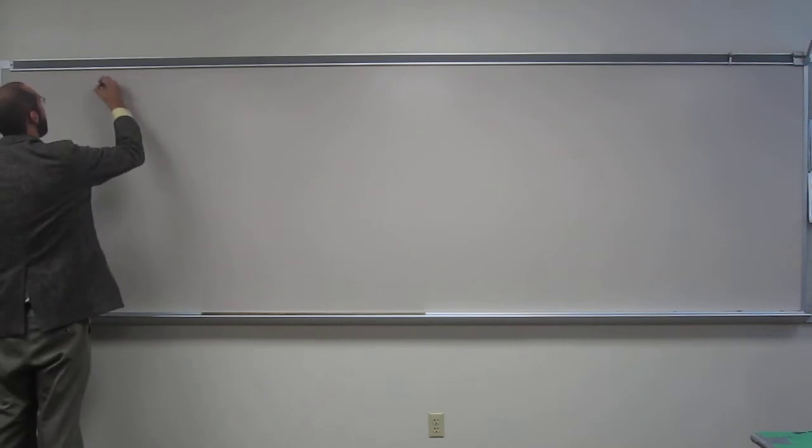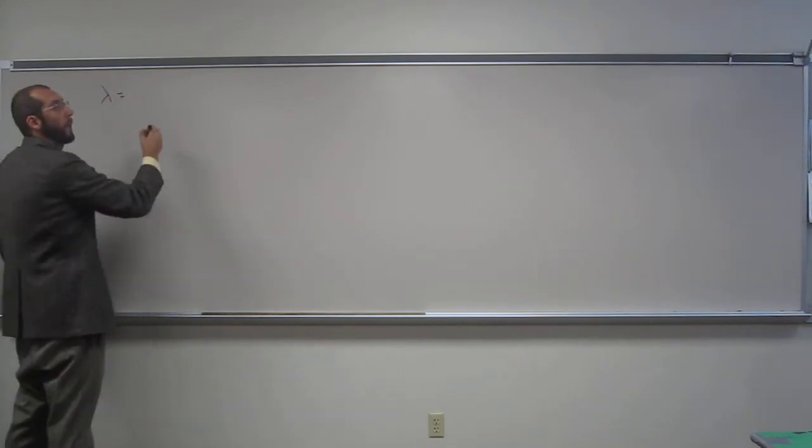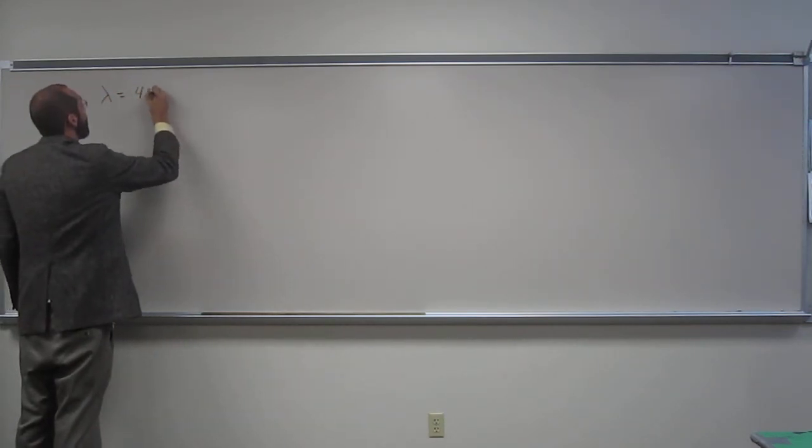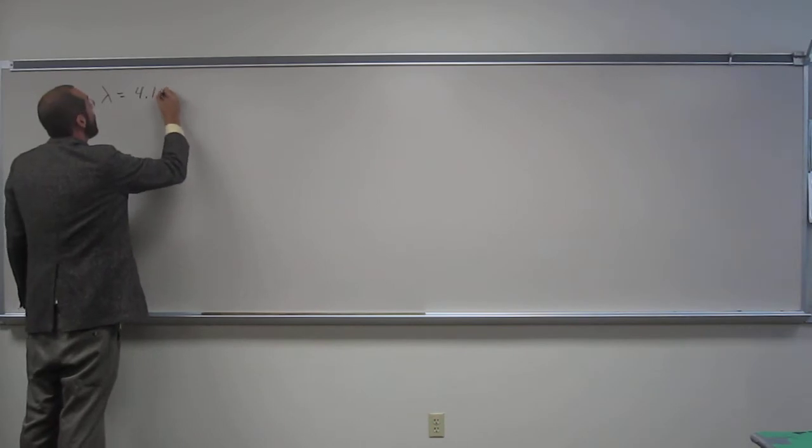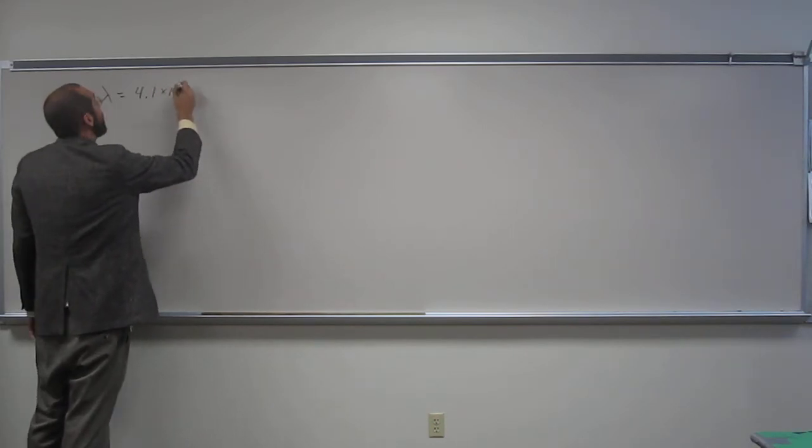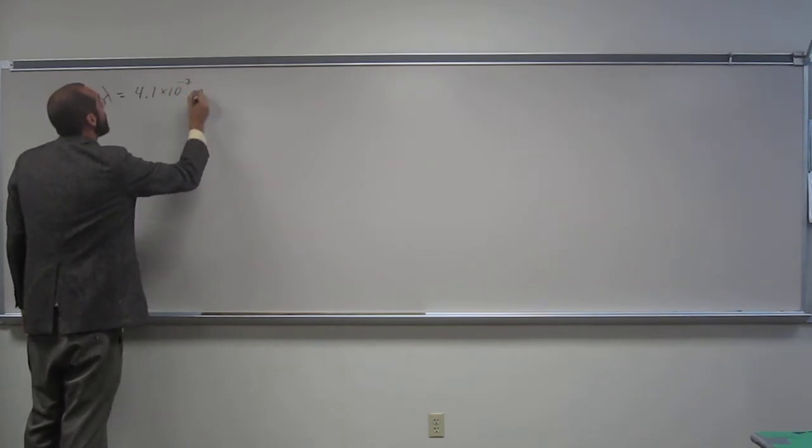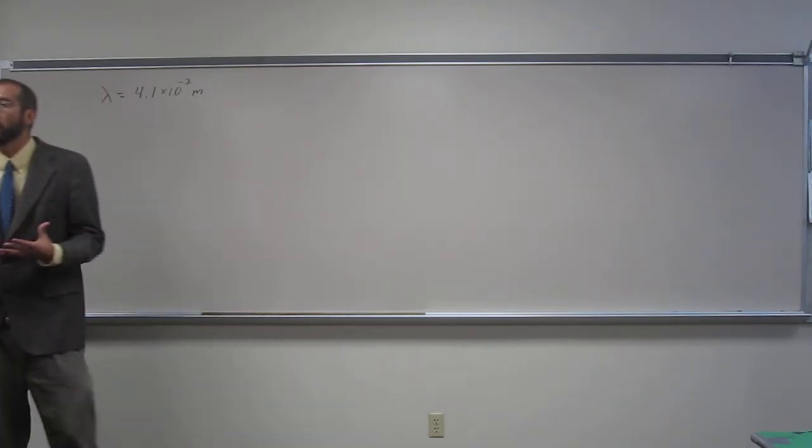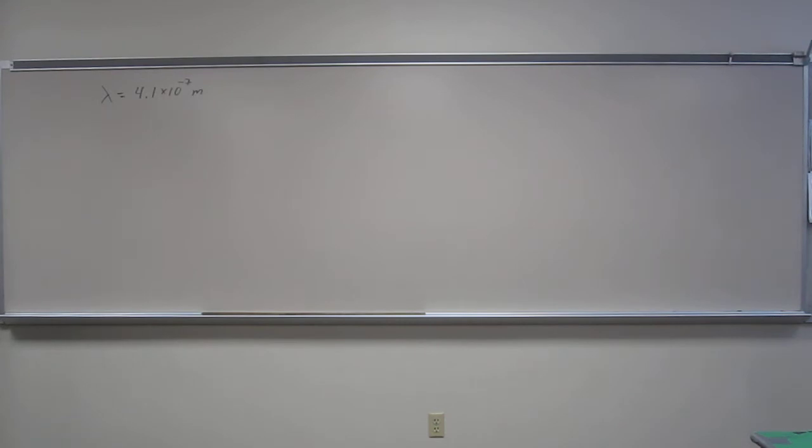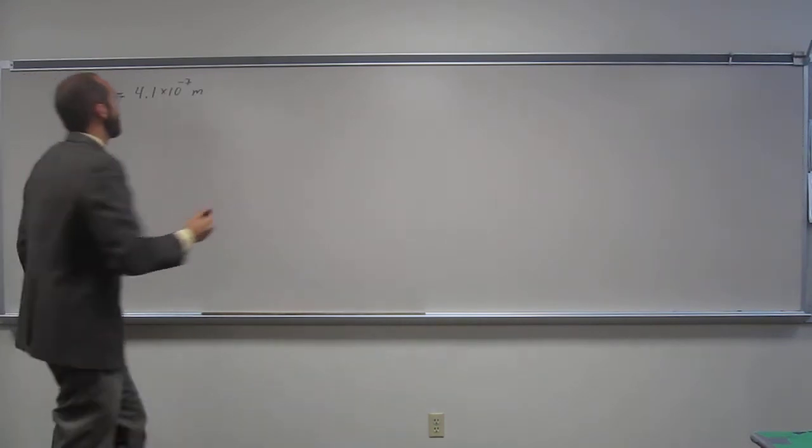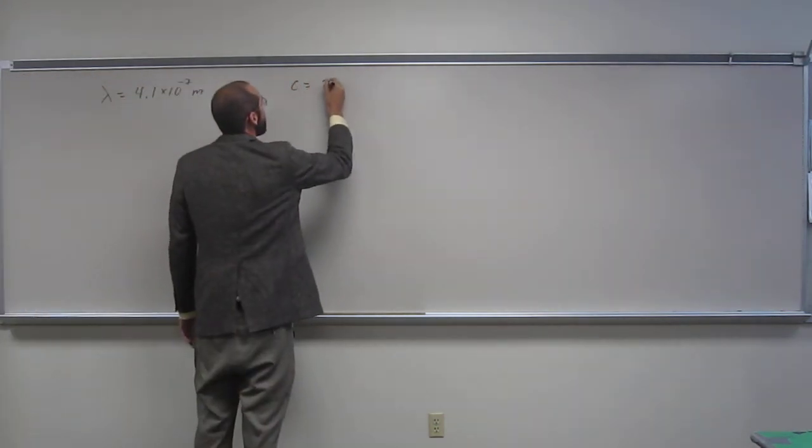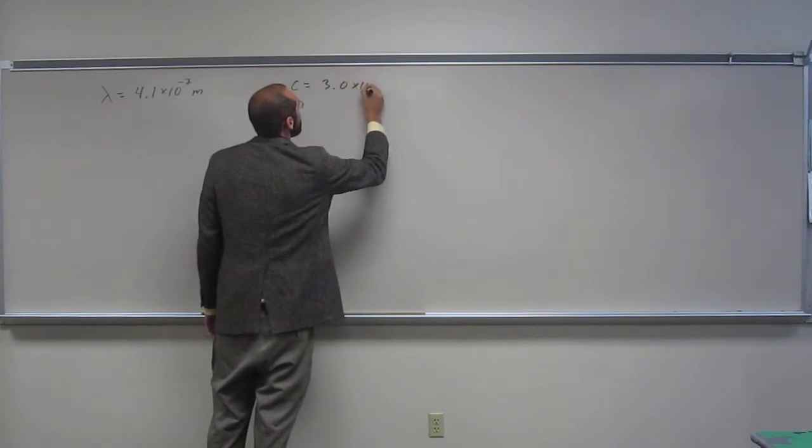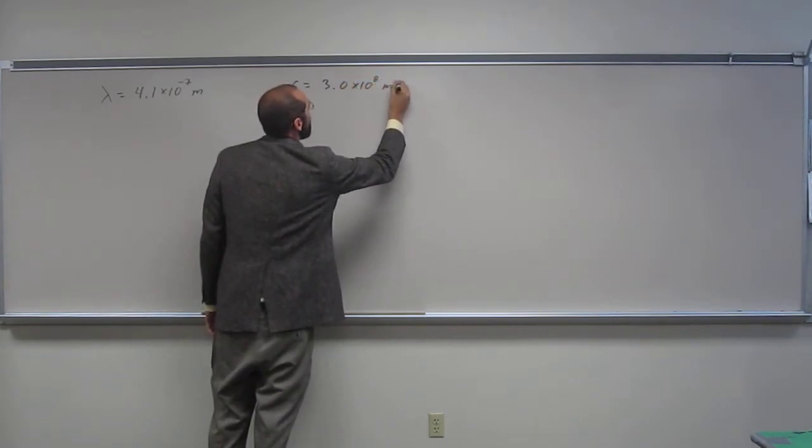So, it gives you the wavelength: wavelength is 4.1 times 10 to the negative 7th meters. And normally you'll be given the value of the speed of light. So that's C equals 3.0 times 10 to the 8th meters per second.